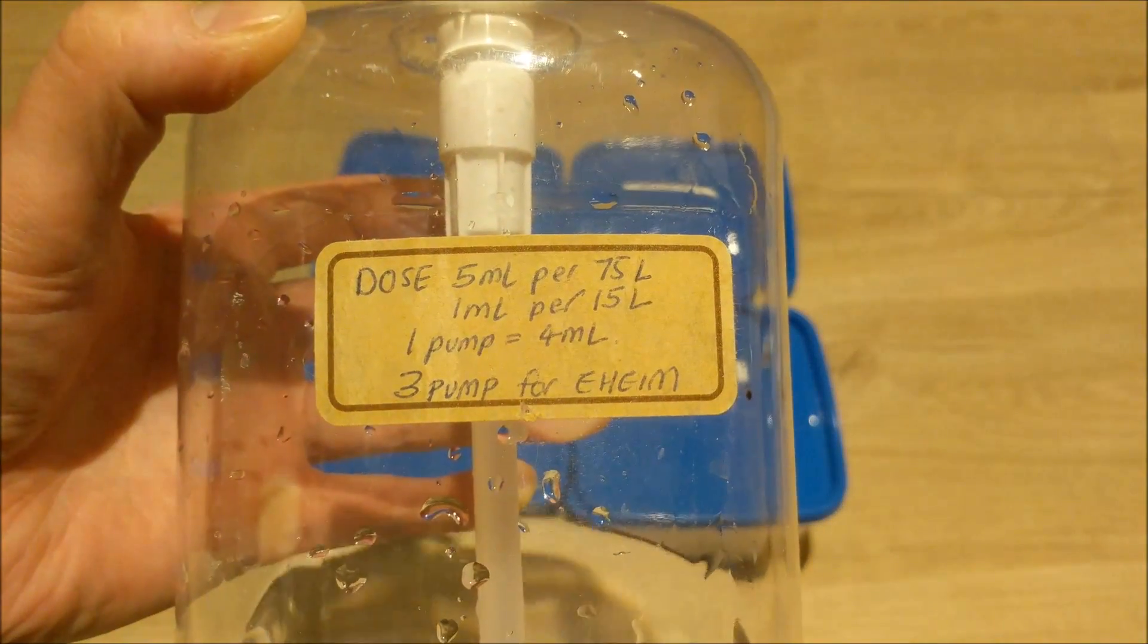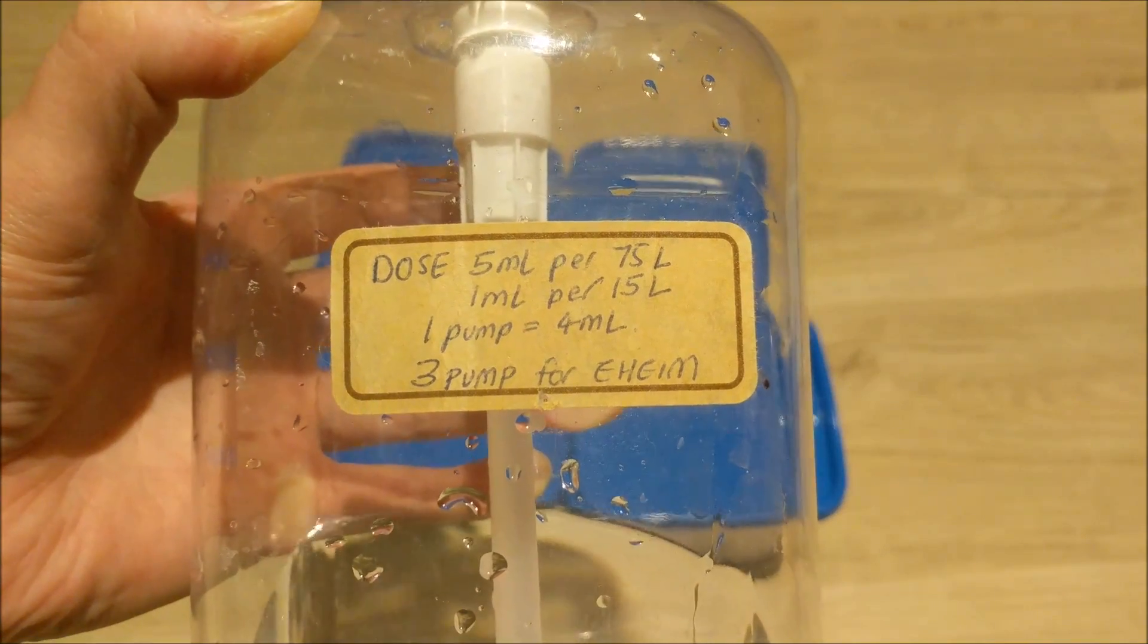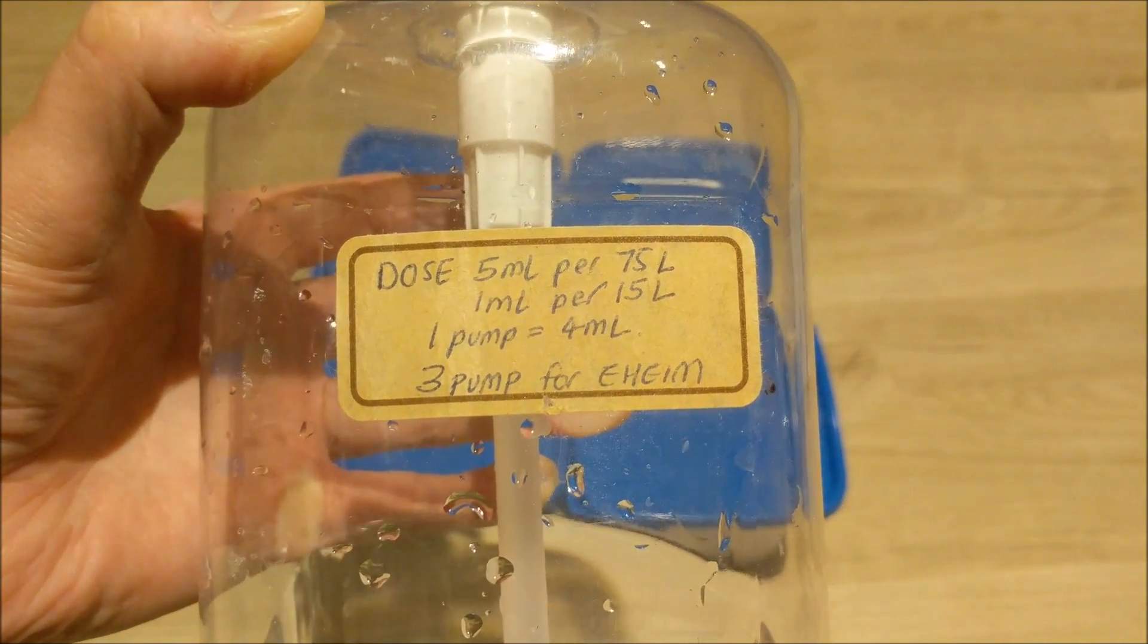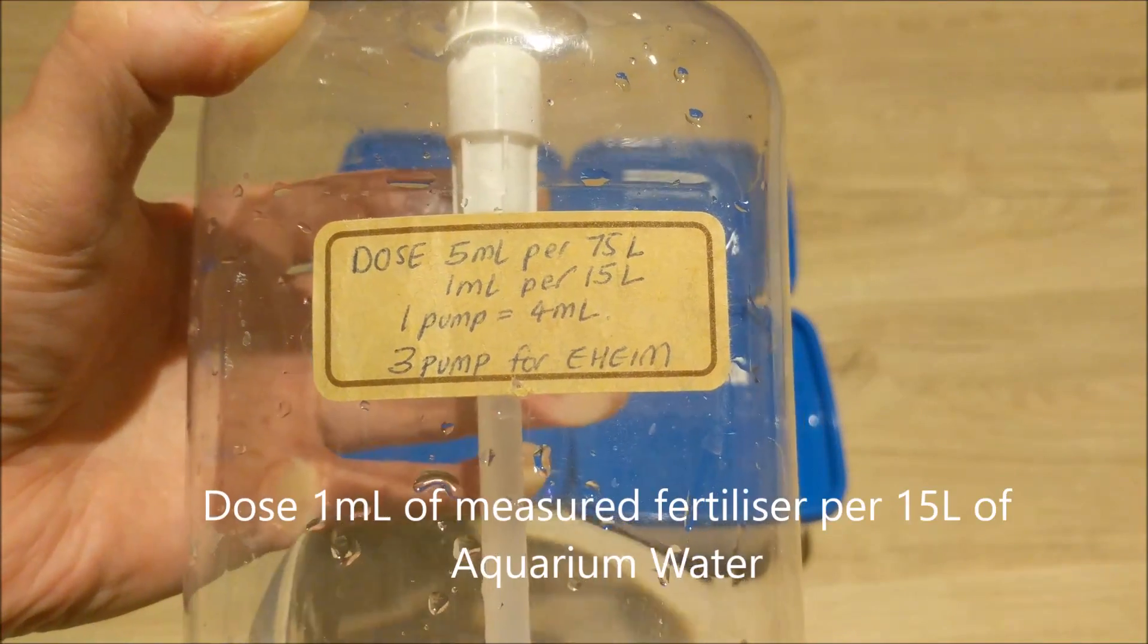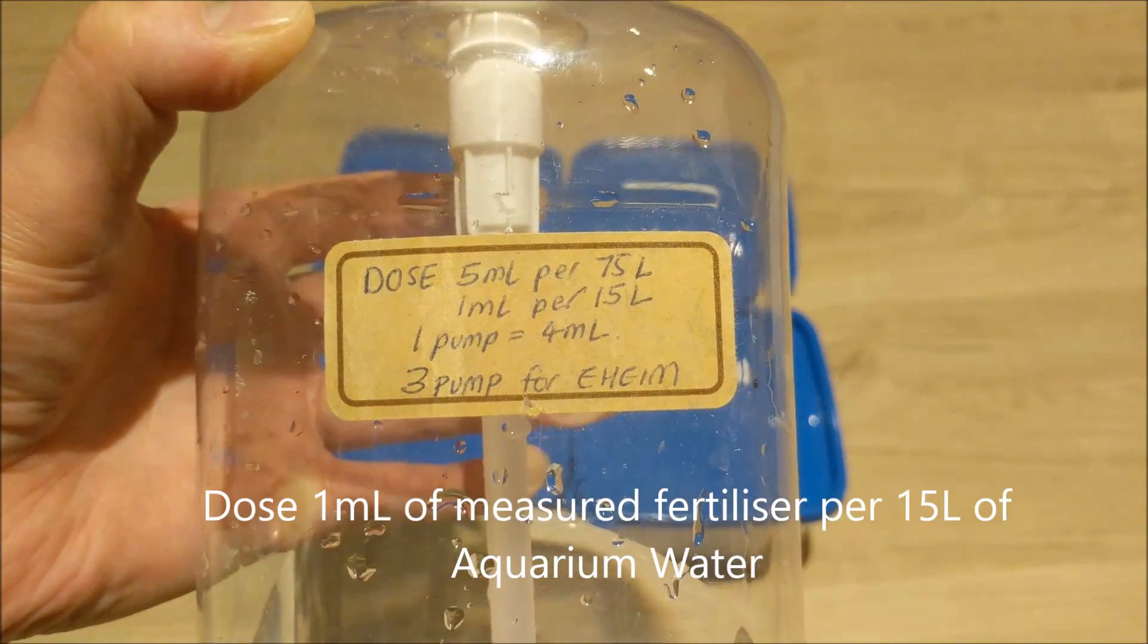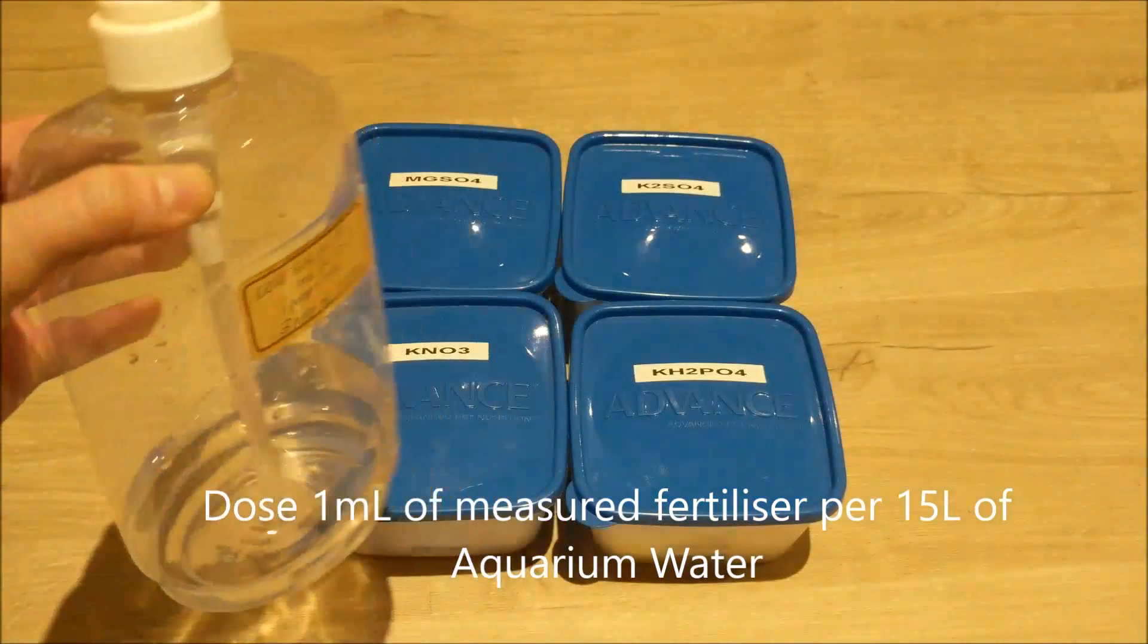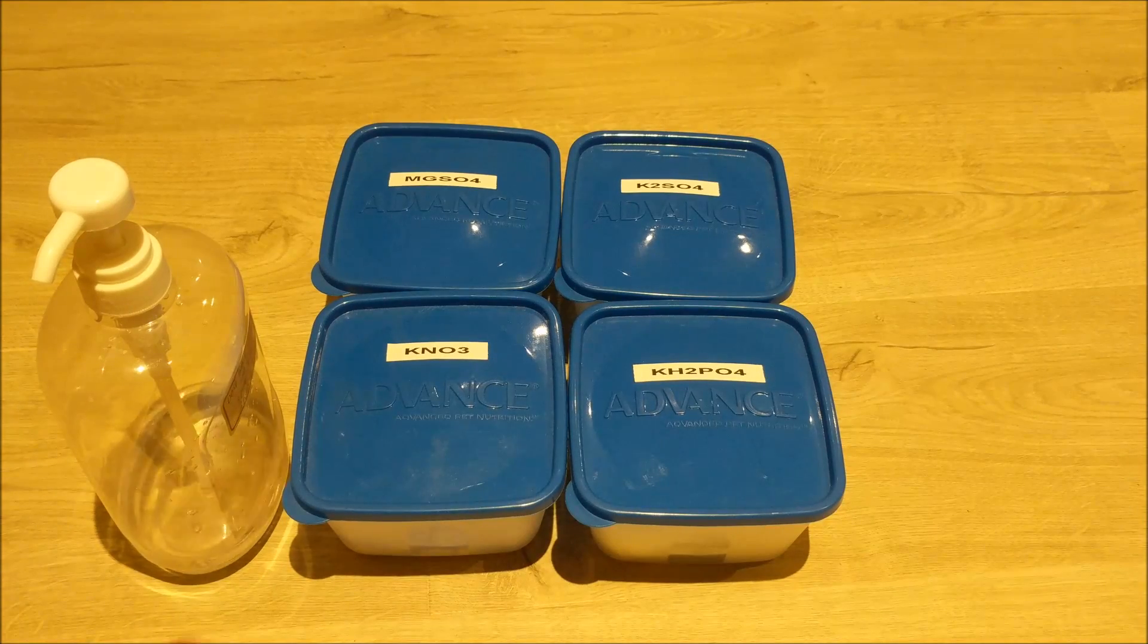So here are the instructions for my aquarium. The concentration that I'm going to make is basically one milliliter per 15 liters of aquarium water, and you want to dose this once a day.